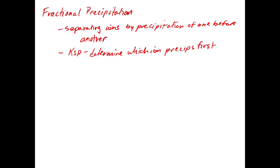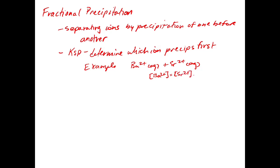Let's look at the textbook example. In this example, you make a solution where you have Ba²⁺ (aq) and Sr²⁺ (aq), and let's say the concentration of both in that solution is 1×10⁻³ M. Now you add to this solution some potassium chromate (K₂CrO₄).